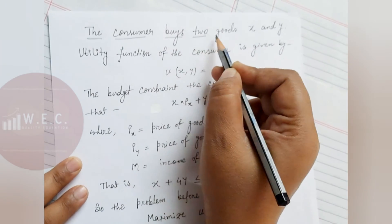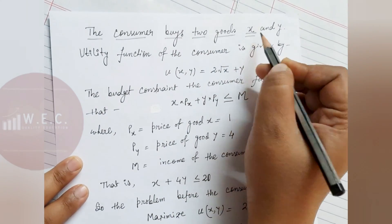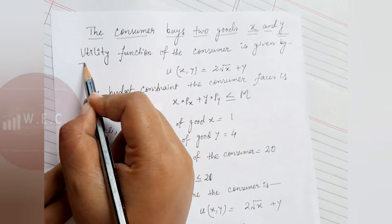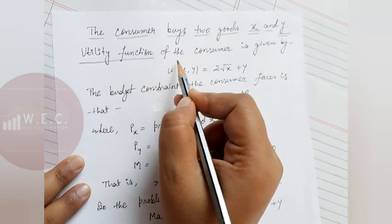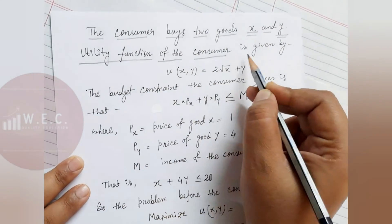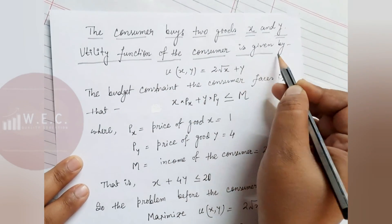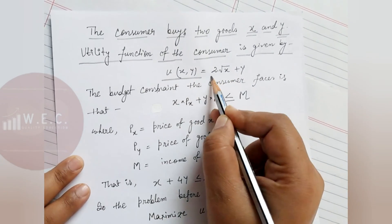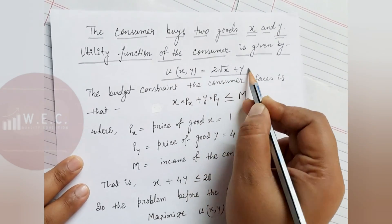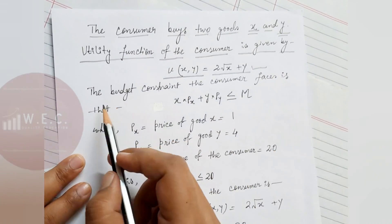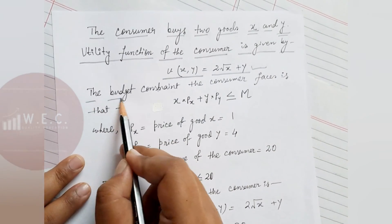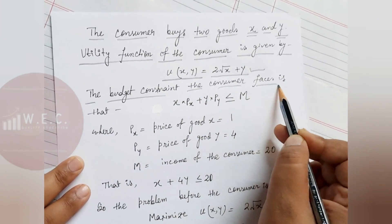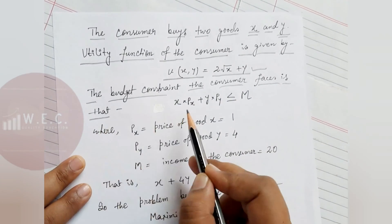The consumer buys two goods x and y. The utility function given here is U(x, y) = 2√x + y. This is the utility function of the two goods. Now the budget constraint will be set up.